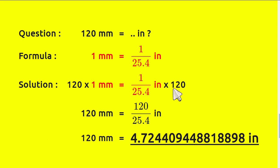You move 120 from here to here, because 120 times one equals its own value, which is 120. Now we have 120 mm equals 120 divided by 25.4 inches.